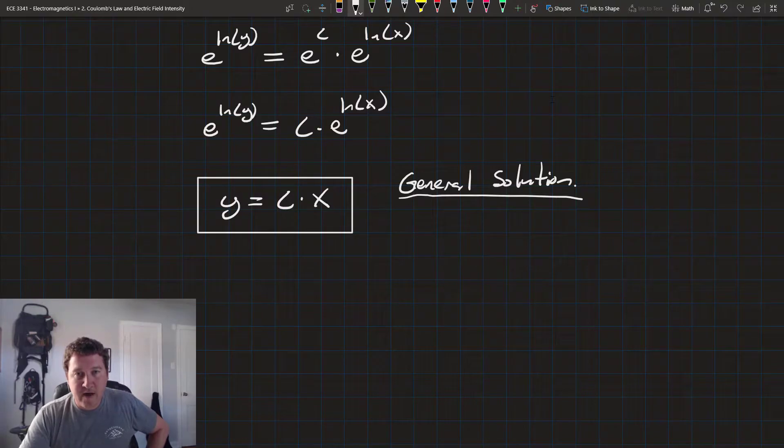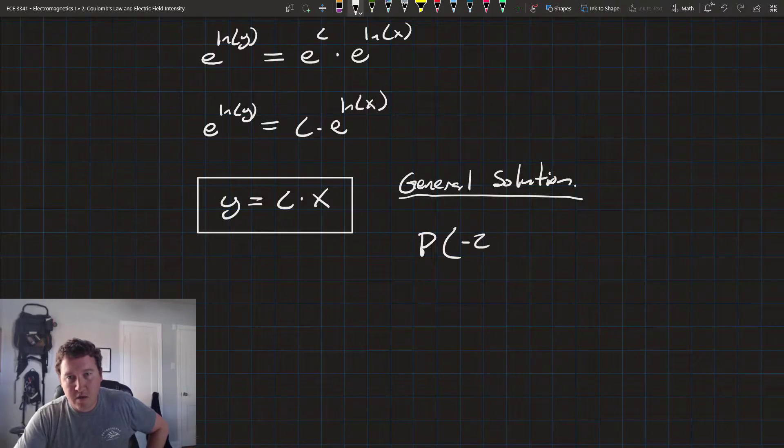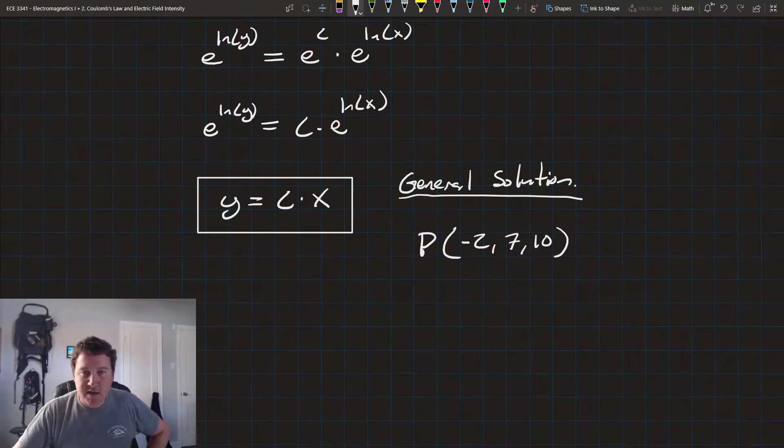Now, if we want to know the value at any given point, or the value of the electric field at any given point, I should say, we need an initial value. So let's say, let's look at the electric field at point P negative 2, 7, and 10.